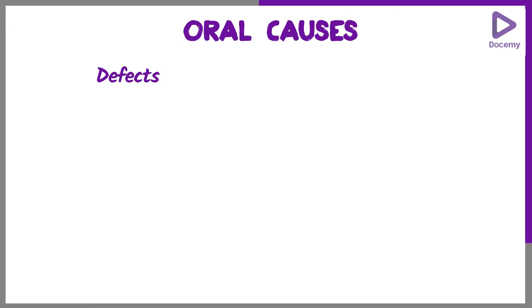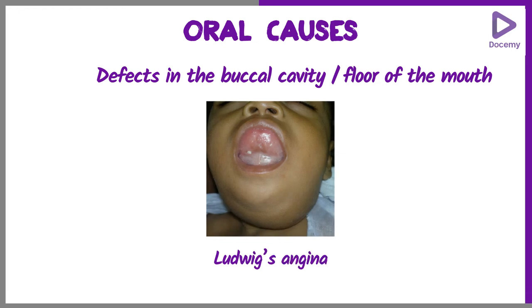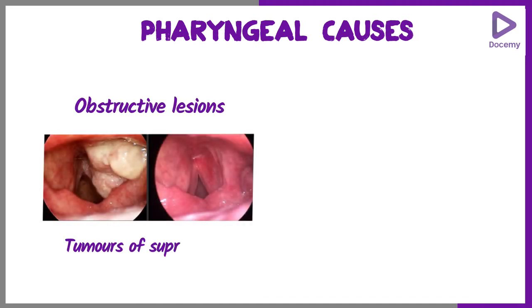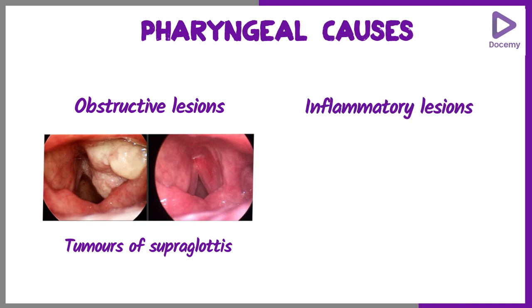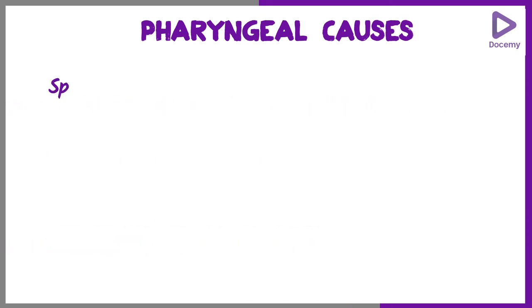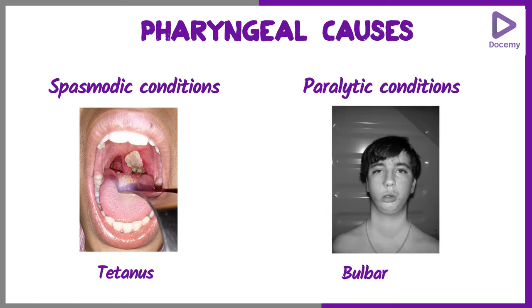Also defects in the buccal cavity and floor of the mouth such as in Ludwig's angina. The pharyngeal causes of dysphagia can be due to obstructive lesions such as tumours of the supraglottis, inflammatory lesions such as peritonsillar abscess, spasmodic conditions such as tetanus, or paralytic conditions such as bulbar palsy.